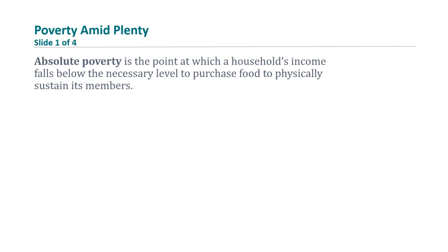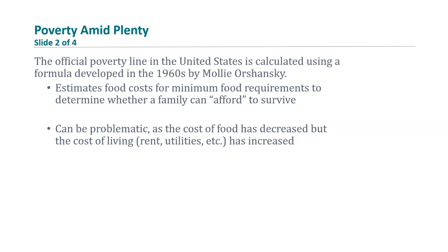The next section looks at poverty amid plenty. Absolute poverty is the point at which a household's income falls below the level necessary to purchase food to physically sustain its members. The official poverty line in the United States is calculated using a formula developed in the 1960s by Molly Orshansky, which estimates food costs for various family types based on the USDA's minimum food requirements and then applies a multiplier. This formula has not changed since its introduction, but has been heavily criticized for not evolving to reflect broad changes over the last 40 years.